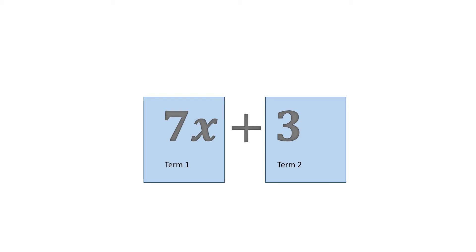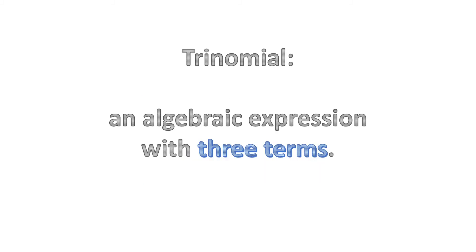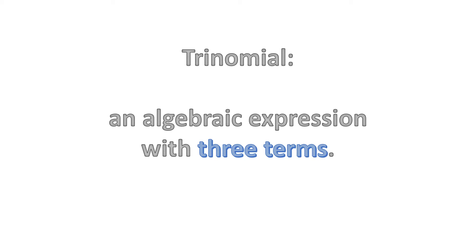A trinomial is an algebraic expression with three terms. For example, 7x squared plus 3x plus 4. 7x squared is our first term. 3x our second and 4 is our third term.